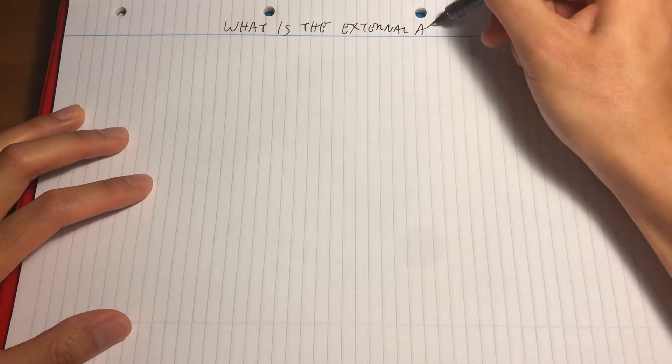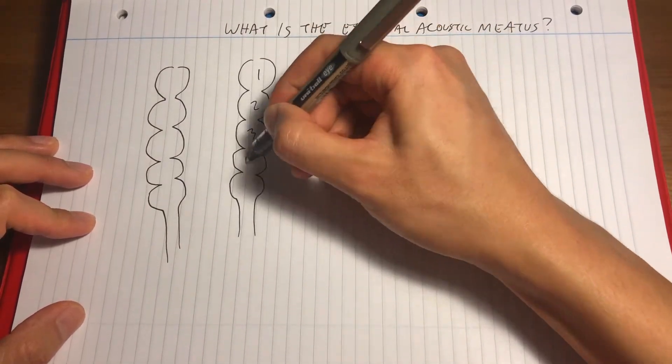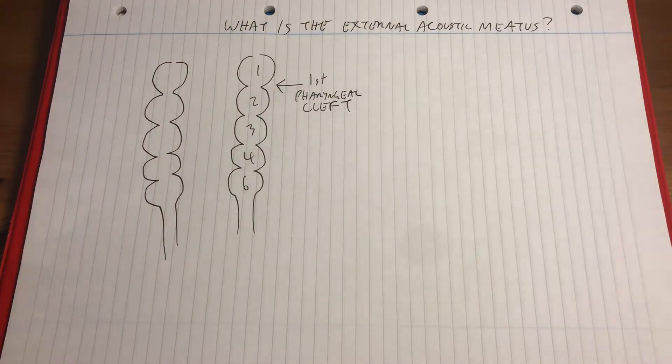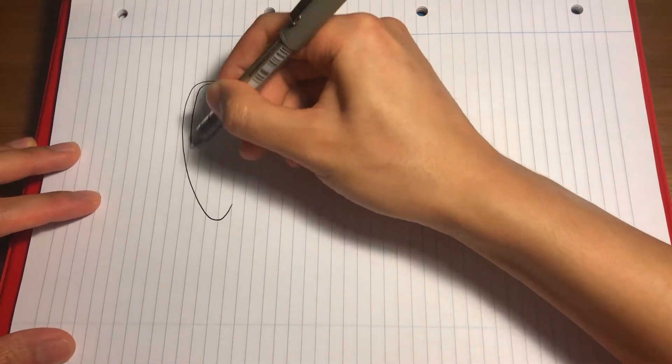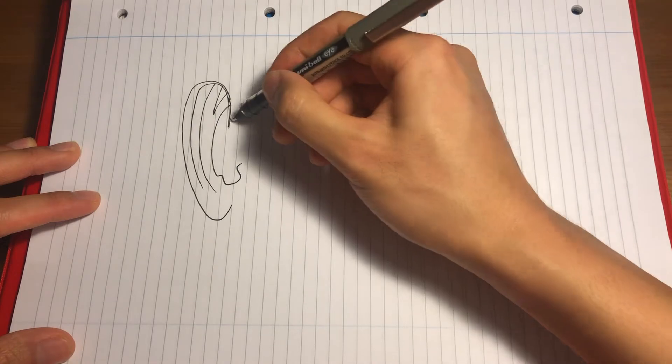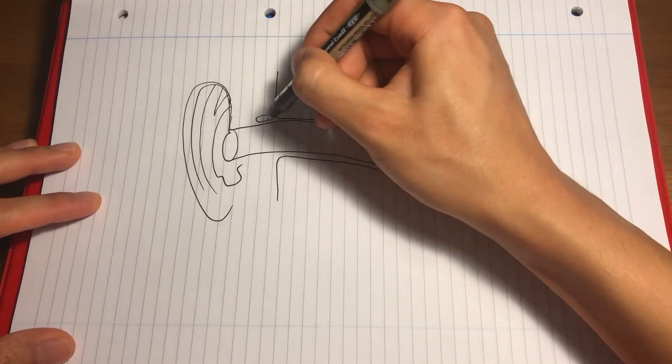So what is the external acoustic meatus? Essentially it derives from the first pharyngeal cleft, that is between the first and second pharyngeal arches. And it is a canal that passes through the temporal bone from the pinna to the tympanic membrane or the eardrum.